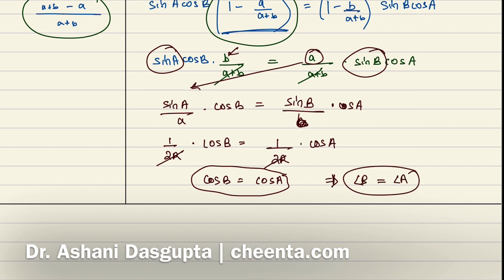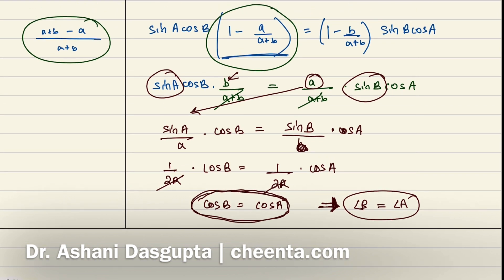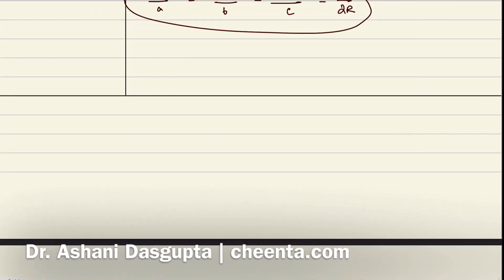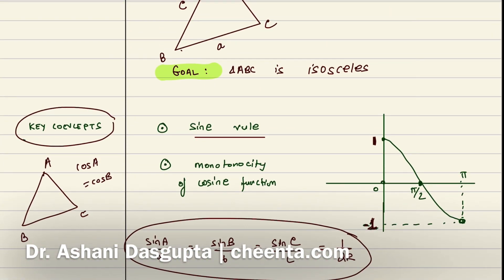Now in the comment can you tell me why this implication follows? I have described why in the beginning of the video but I want you to process that idea and tell me why I can say cosB equals cosA implies angle B equals angle A. Remember that's not always the case, something very special is happening here. Okay, so I hope you have learned something from here and how to use these two important key concepts: sine rule and monotonicity of the cosine function.